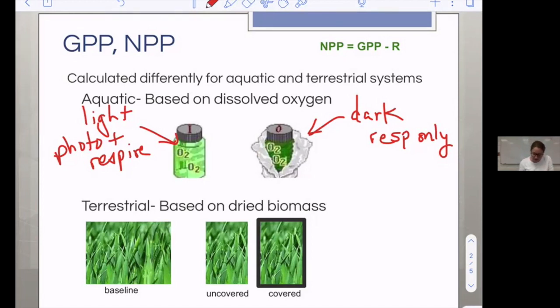However, if we make a comparison between this one and this one, the difference between them will tell us how much photosynthesis was going on. So we say the net productivity is when we have photosynthesis and respiration going on. So when something is in the light, that will give us the net primary productivity.